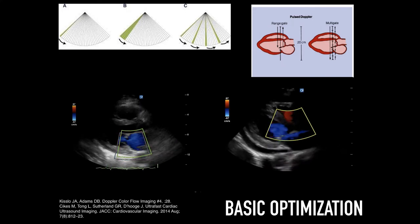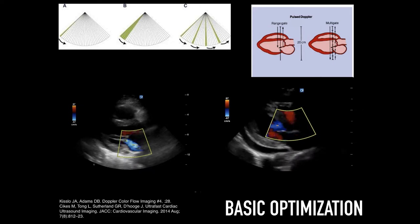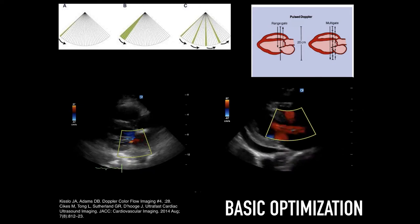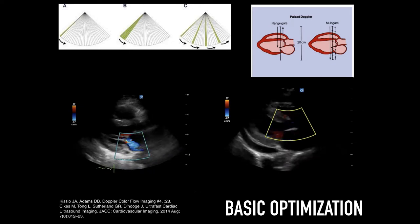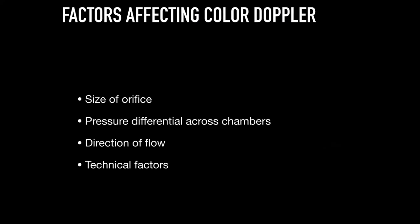In summary, the factors affecting color Doppler include size of the orifice, the pressure differential across chambers, direction of flow, and of course technical factors.